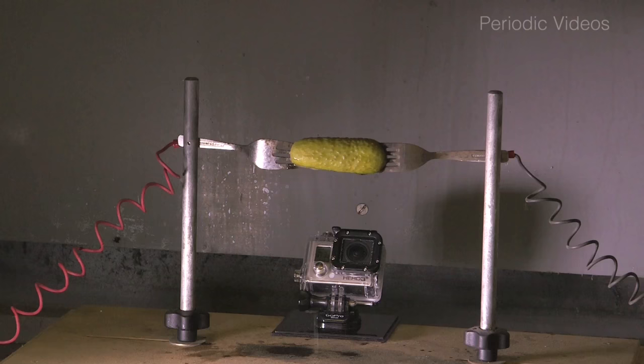And we spent quite a lot of time thinking why should it be at the neutral end rather than where the voltage is changing. So in the end we thought we'll just try it again. And the next gherkin it went at the other end so it's clearly chance.